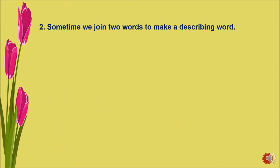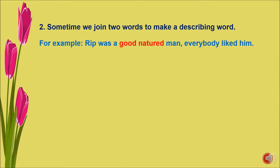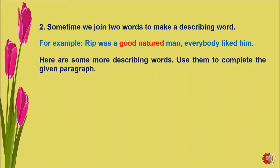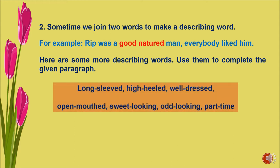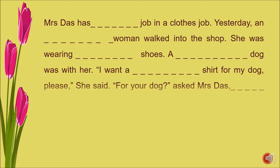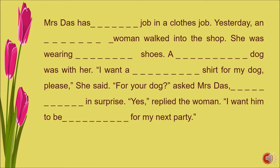Question two: sometimes we join two words to make a describing word. For example, Rip was a good-natured man — the highlighted word 'good-natured' is a describing word. Here are some more describing words: long-sleeve, high-heel, well-dressed, open-mouthed, sweet-looking, odd-looking, and part-time. We have to use them to complete a given paragraph.